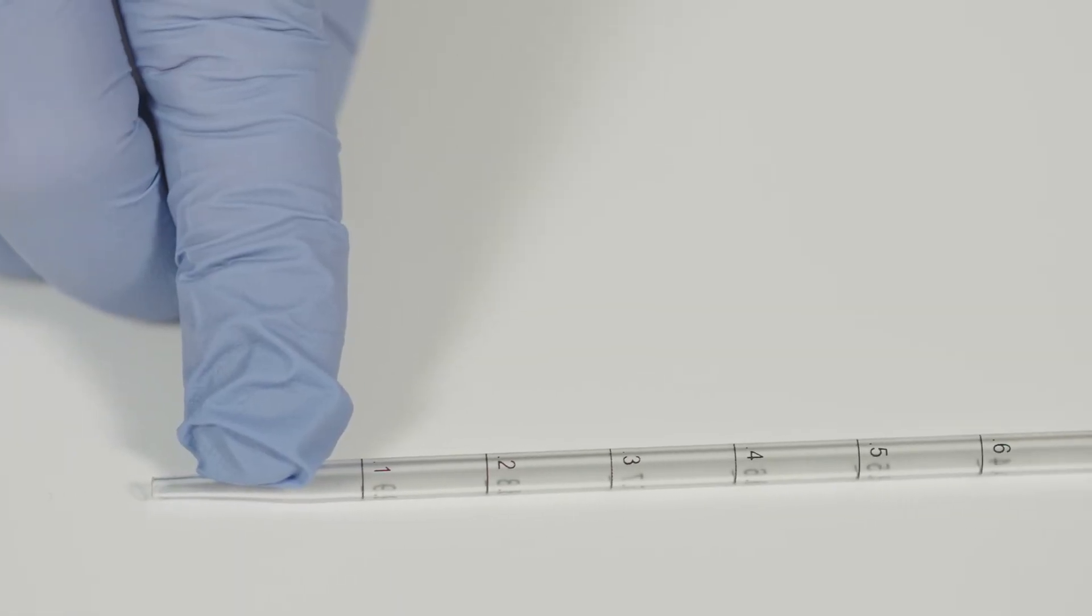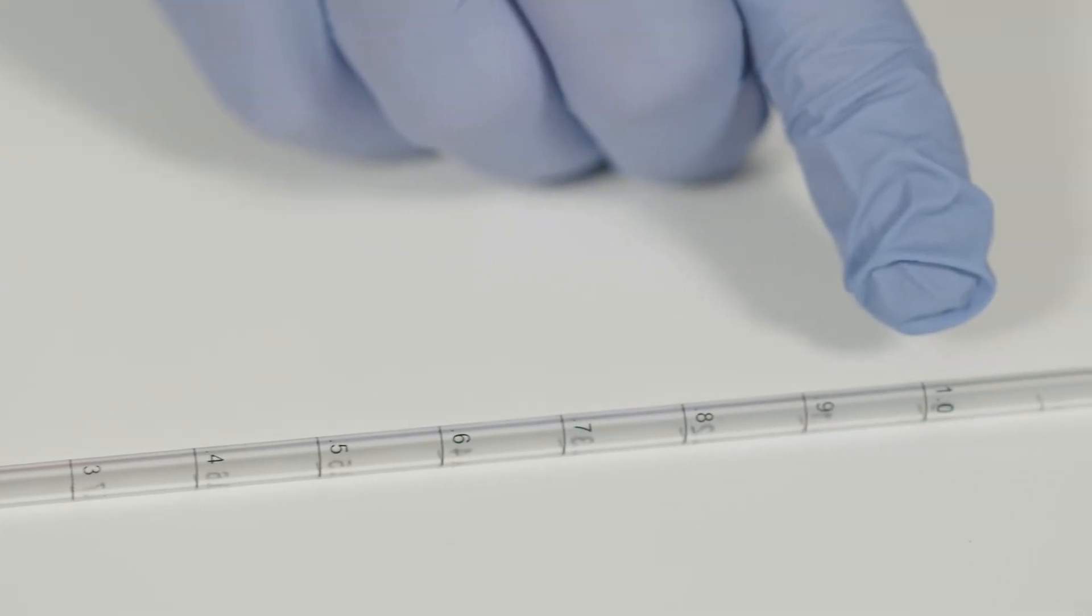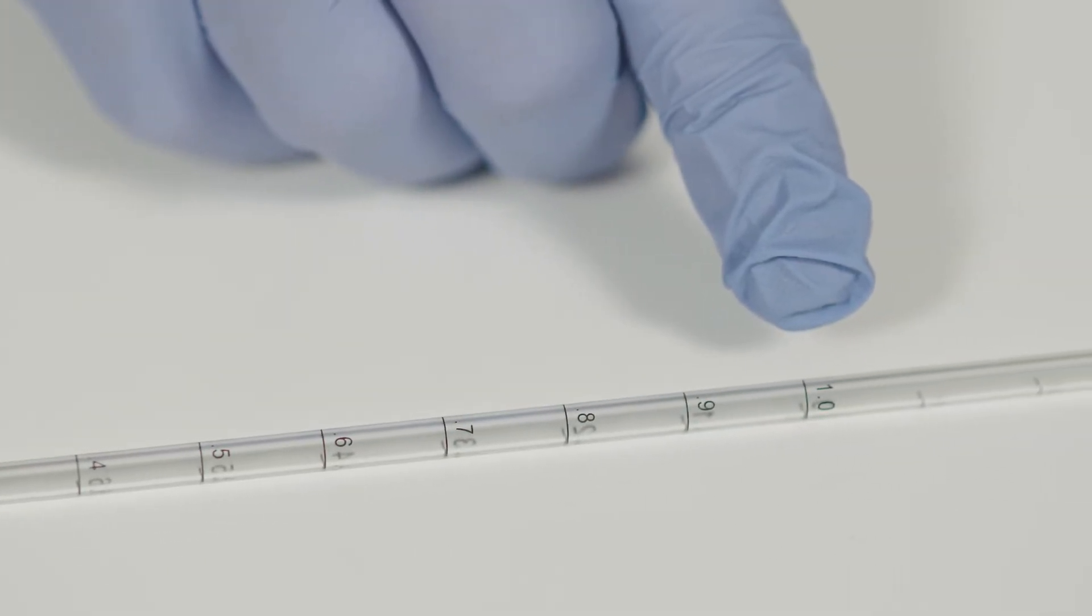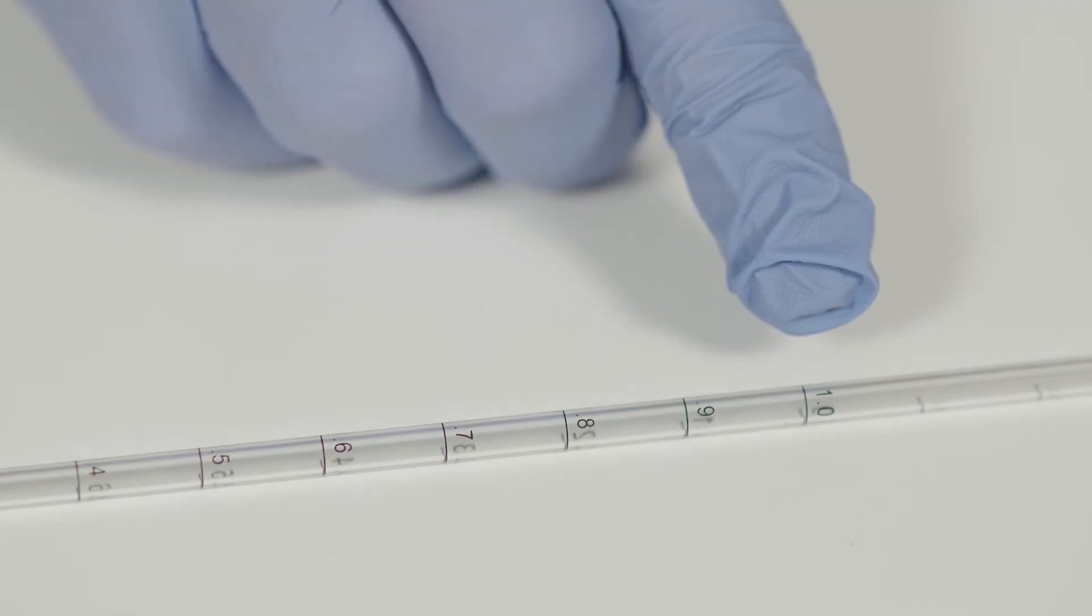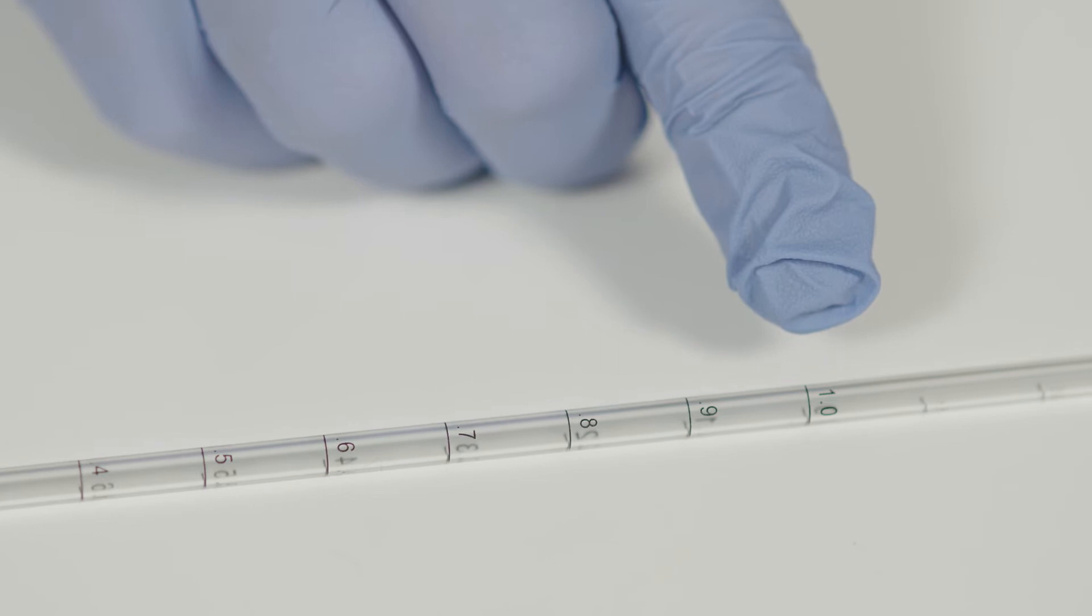Now take a look at the measurement scales. You can see there are two of them. One side goes from 0.1 at the bottom up to 1.0. This is the scale you use to measure how much you are pulling up into the pipette, how much liquid is contained there.